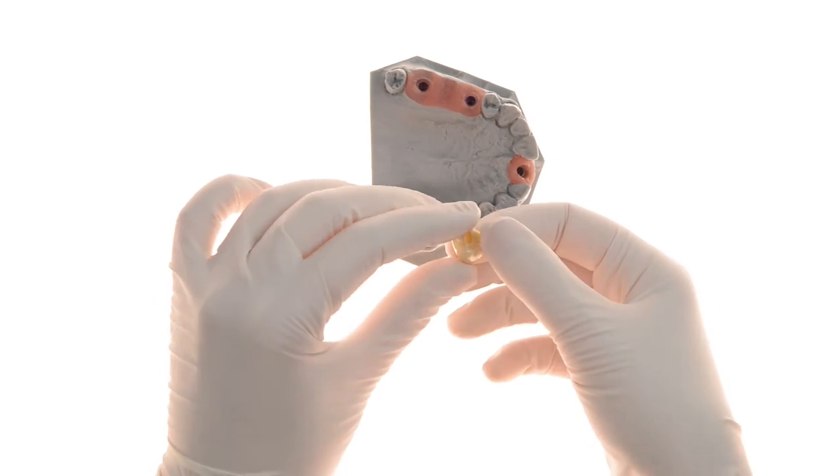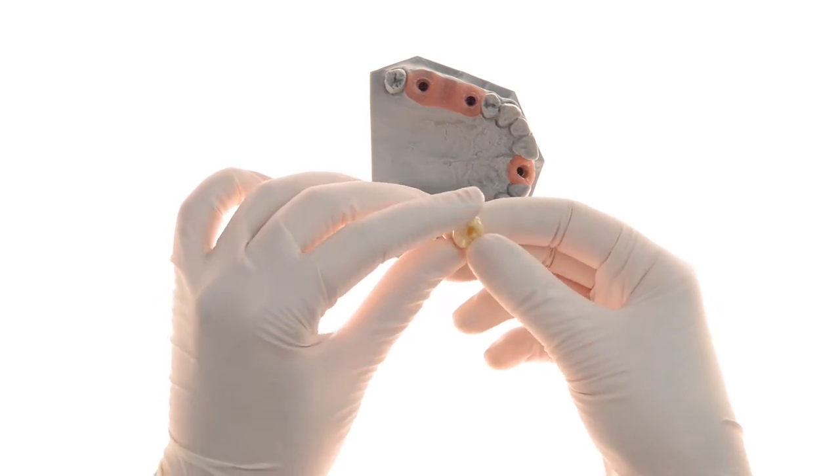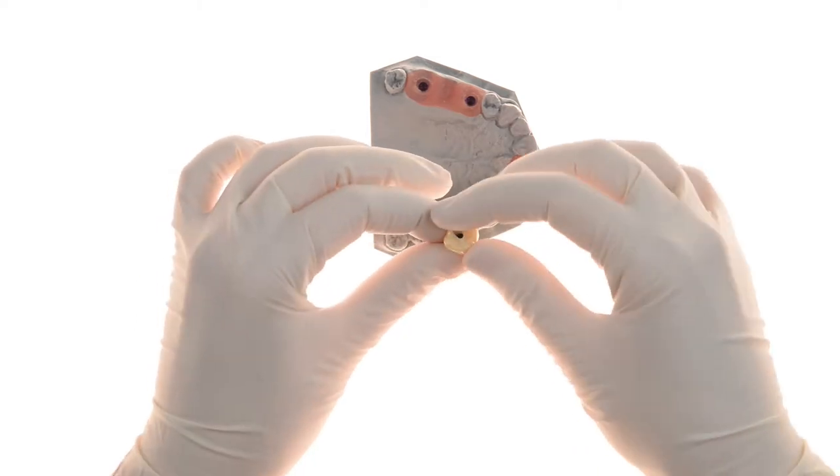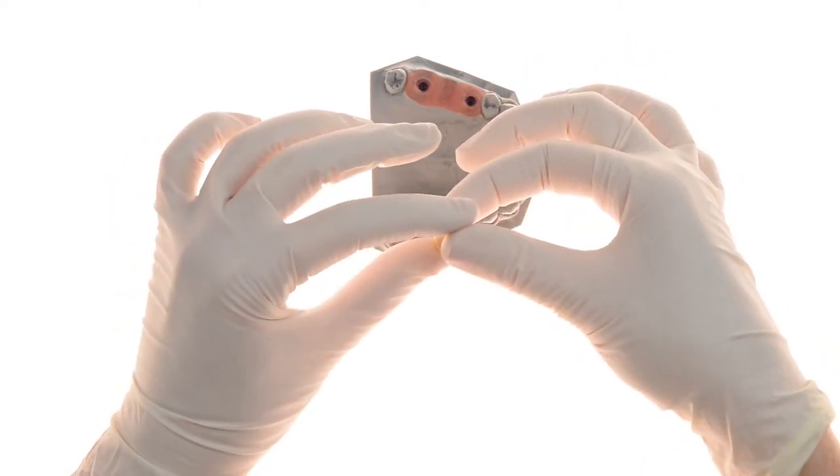Here you can see the crown prior to being cemented to the EasyBase. After cementation, the crown may be inserted into the implant and screwed into place.